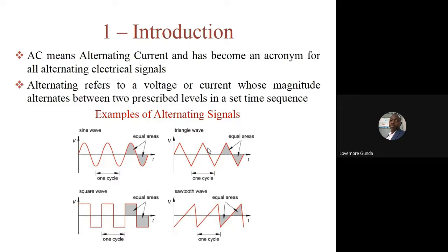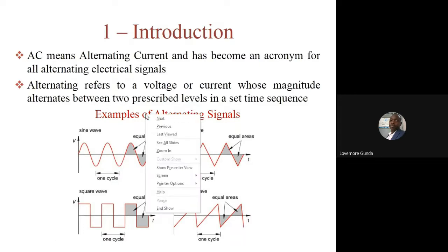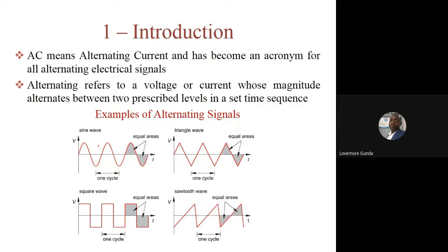In AC signals, you realize that they alternate around some set point. In our case we will be looking at perfectly alternating quantities — in other words, they have a defined magnitude and a defined period, such that it is almost a repetitive sequence.